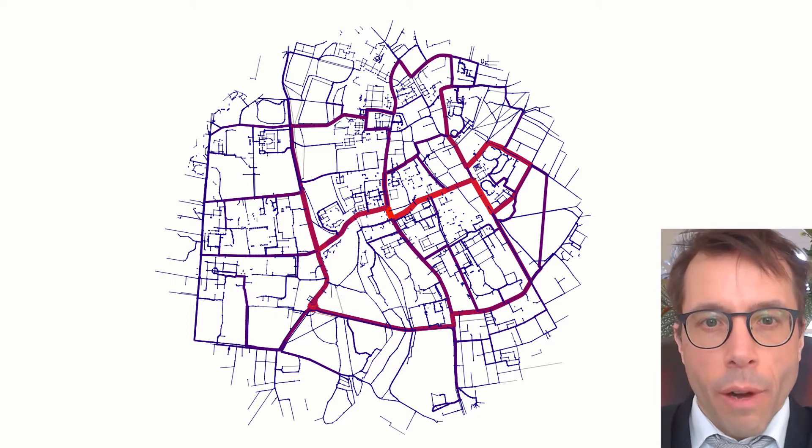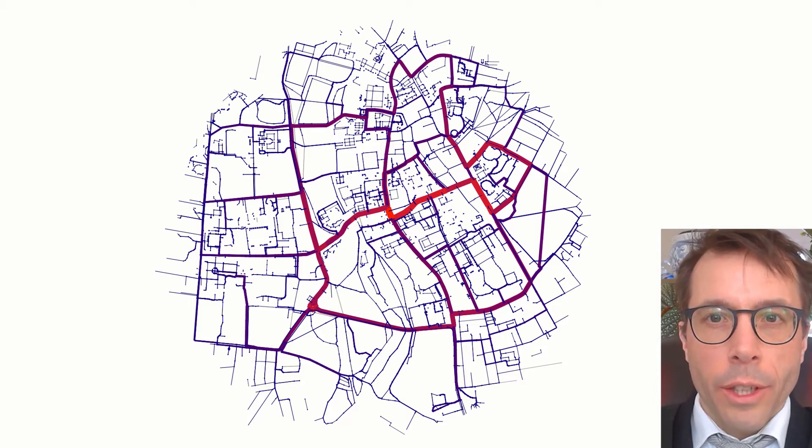That is one shortest path for every pair of vertices on the map, and then I counted up how many of these shortest paths pass through each edge. That's my estimate for what the likely demand is, and that's what the colors here are showing.